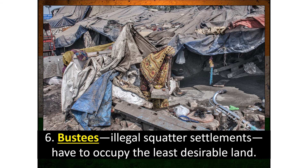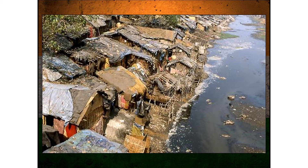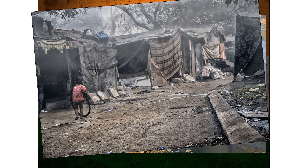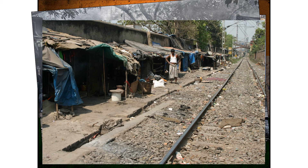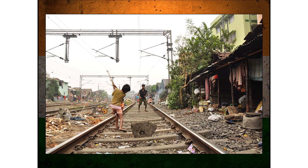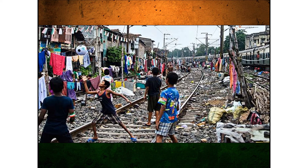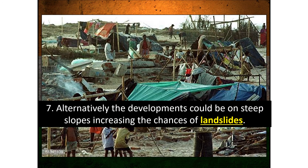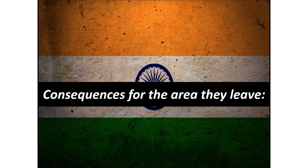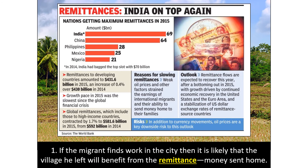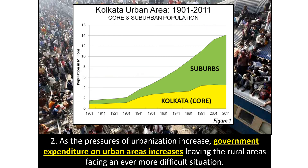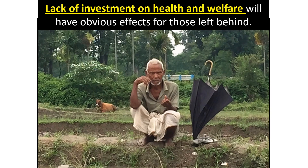Slums, called busties, or illegal squatter settlements must occupy the least desirable land — and could be on steep slopes, increasing the chances of landslides. Consequences for the area migrants leave: if the migrant finds work in the city, the village he left will likely benefit from remittances — money sent home. However, as urbanization increases, government expenditure on urban areas increases, leaving rural areas in an ever more difficult situation, with lack of investment in health and welfare having obvious effects on those left behind.